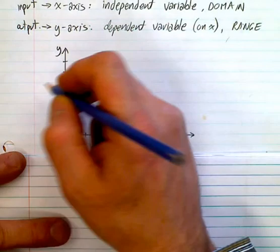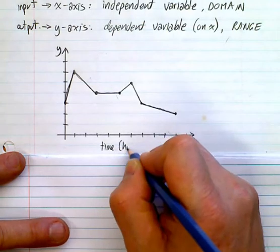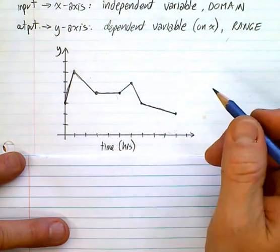So, for example, down here, we often have time. So, let me put time down here. It could be hours. It could be seconds. It could be minutes. Whatever.